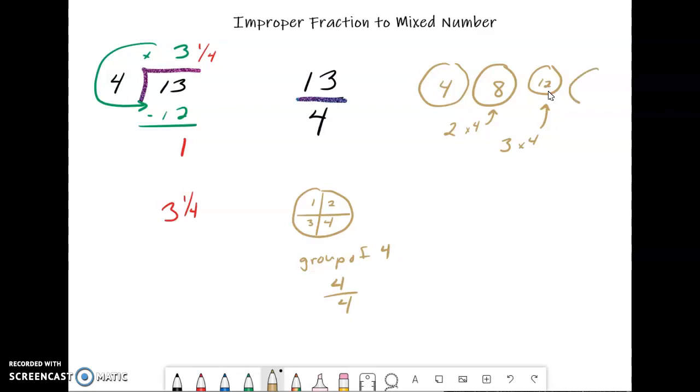To make a fourth one, we would have 4 groups of 4, which means we'd have 16. Here's where we run into our problem. We started out with 13. We don't have enough to make this one, so this won't work.